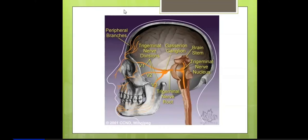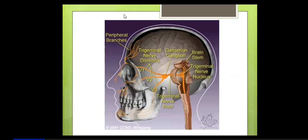The pterygopalatine ganglion is topographically attached to the maxillary nerve and is also called the 'ganglion of hay fever' because it conveys sensory fibers and secretomotor fibers to the nose, orbits, palate, pharynx, soft palate, and paranasal sinuses — mediating the sneezing reflex.